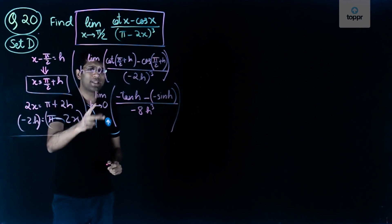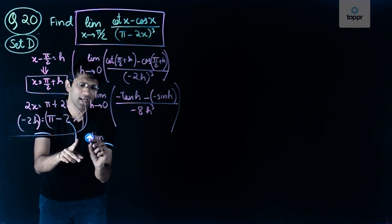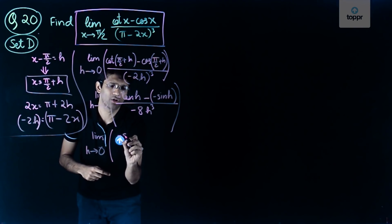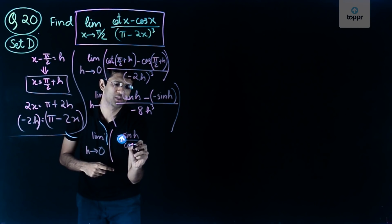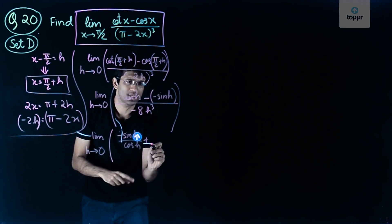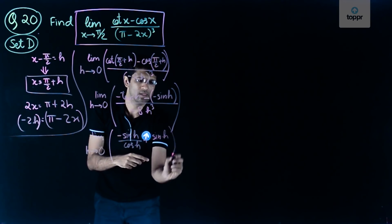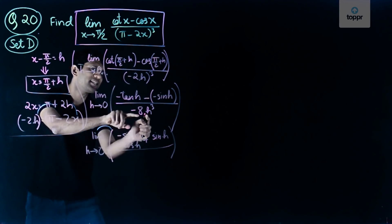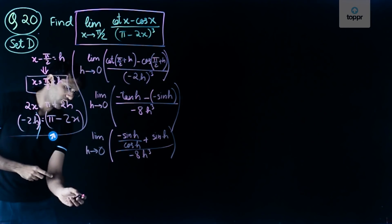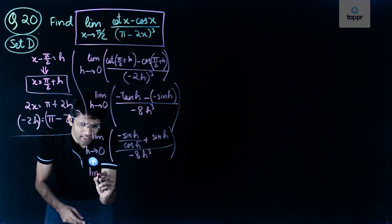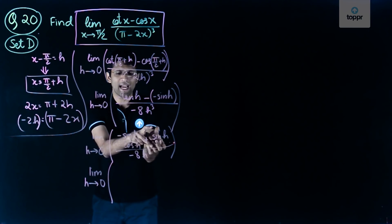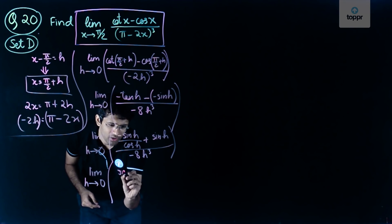We can further write tan h as sin h upon cos h. So we get minus sin h upon cos h, and then minus into minus becomes plus, giving plus sin h. We then factor sin h out of the bracket, so sin h comes out and what remains inside is 1 upon cos h plus 1, all over minus 8h cubed.